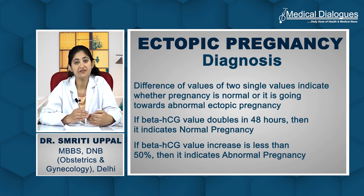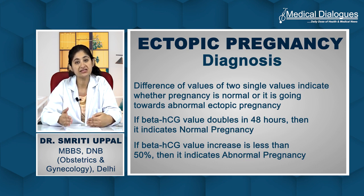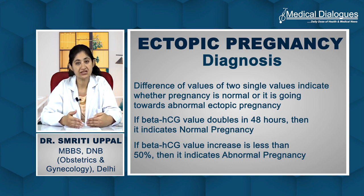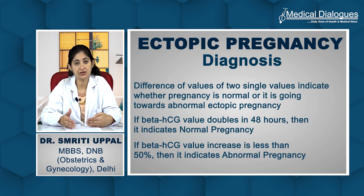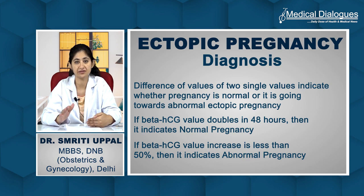If there is no significant rise — meaning no doubling of beta-HCG — and the increase is less than 50% of the original value, then we need to be suspicious. We need to follow up this patient very closely with repeat ultrasounds and one or two more readings of beta-HCG at 48-hour intervals respectively.